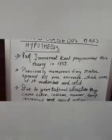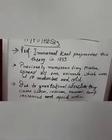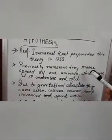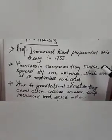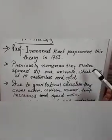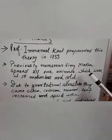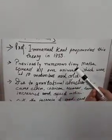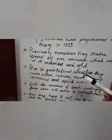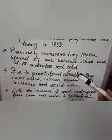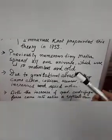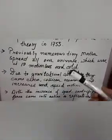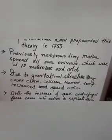He said that previously there were innumerable numbers of tiny particulate matter, or primitive matter, spread all over the universe, which were cold and motionless. But due to the gravitational attraction that occurs between them, they came closer to each other. As a result of that, a collision occurred between the two particulate matters.